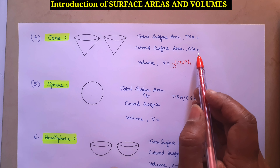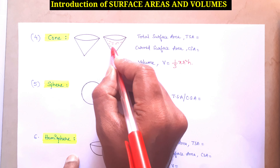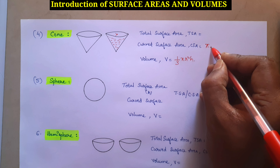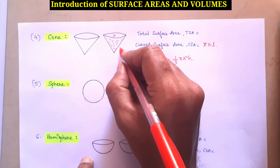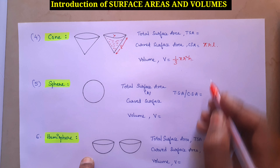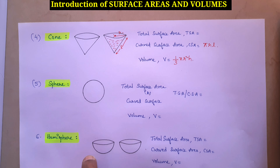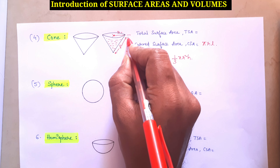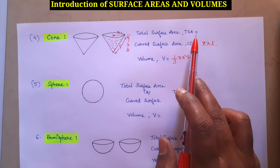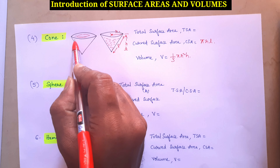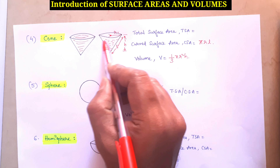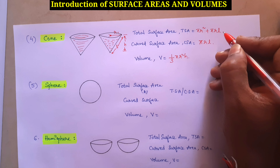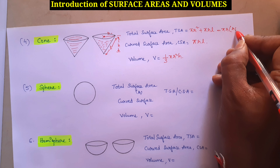Curved surface area of a cone means only the outer slanting part — the top portion is not included. The formula is πRL, where L is the slant height and R is the radius, and H is the height of the cone. For total surface area, we include the circular base: πR² + πRL, taking πR common gives TSA = πR(R + L).